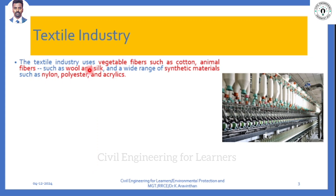The textile industry uses fibers. Cotton is a fiber - it is made from plants. Certain fibers are derived from animals. We are wearing jerkins, and that material is taken from some animal - it might be from hogs or sheep. So those animal-based fibers are used as well.